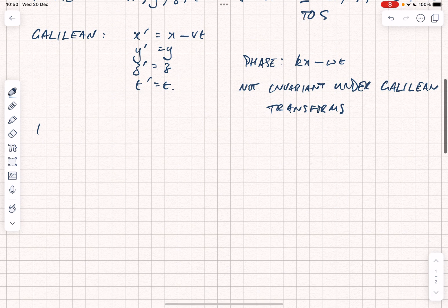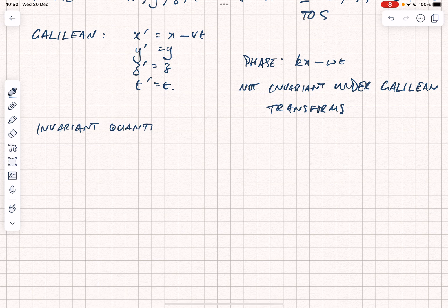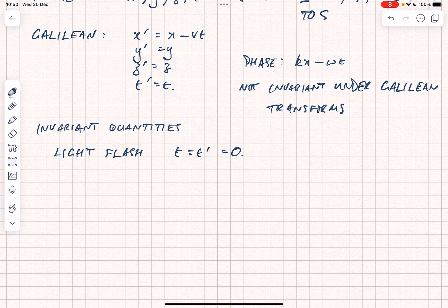So, we now need to introduce the idea of what are called invariant quantities. We'll come back to these through the course of the videos. The simplest idea of an invariant quantity is to consider a light flash which takes place at t is equal to t prime is equal to zero. And let's assume that we've got the origins of s and s prime coincident at t equals zero.